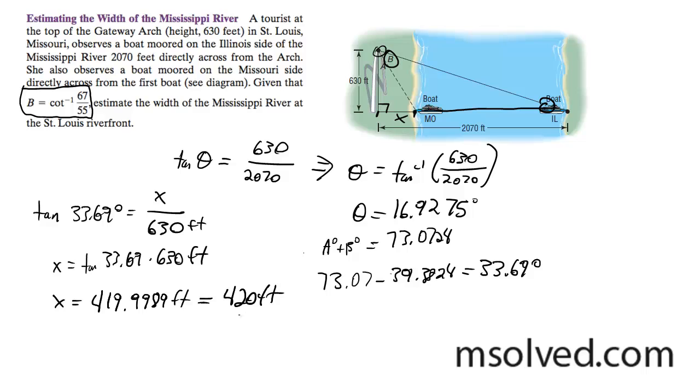Then what I do for my river width, I take 2070 minus 420 feet, and that gets me 1650 feet. And that's it.